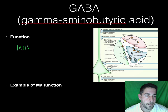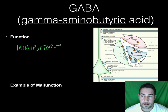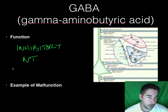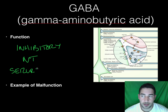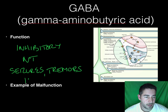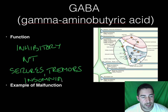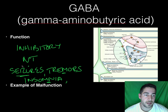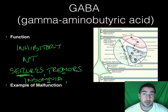GABA is an inhibitory neurotransmitter. If you have too little, you might get seizures, tremors, or insomnia. It inhibits certain things — seizures mean you have too much electrical activity. Insomnia means you're not able to calm your body down. GABA inhibits your brain from just continuing to fire, and if too many neurotransmitters or electrical impulses are sent out, that can lead to all these things.